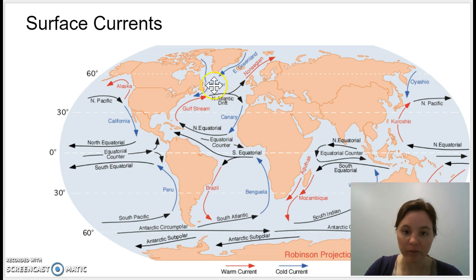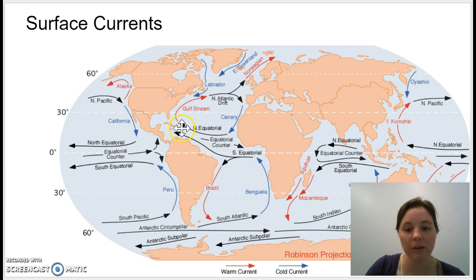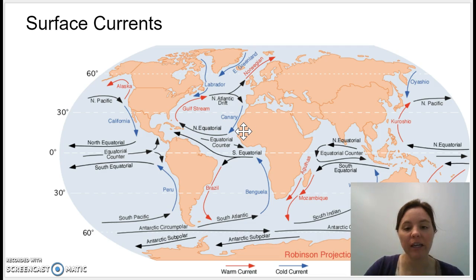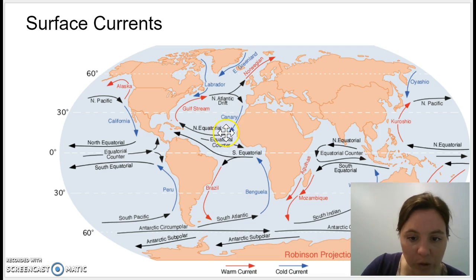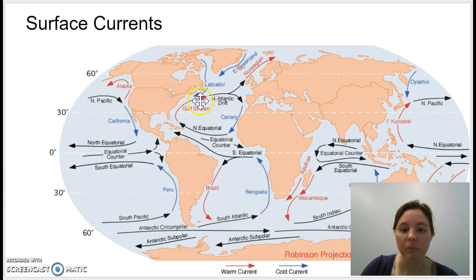We have cold water sinking and warm water coming in to take its place, driving circulation. Let's look at the North Atlantic gyre — a gyre is just a large circulating pattern of water. The north equatorial current travels along the equator and gets warm due to lots of solar insolation, then hits the North American continent and is forced to curve upwards.